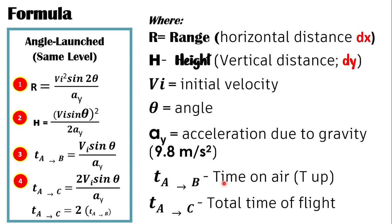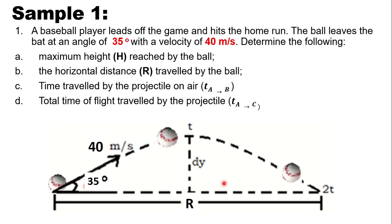For you to understand how these formulas are used, let's begin sample problem one. A baseball player leads off the game and hits a home run. The ball leaves the bat at an angle of 35 degrees with a velocity of 40 meters per second. You are asked to determine: (A) the maximum height reached by the ball, (B) the horizontal distance traveled, (C) the time traveled by the projectile on air, and (D) the total time of flight.